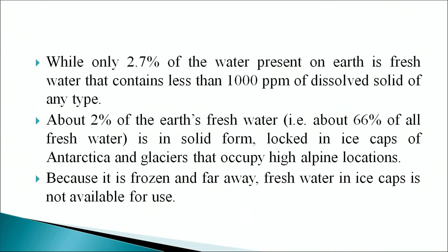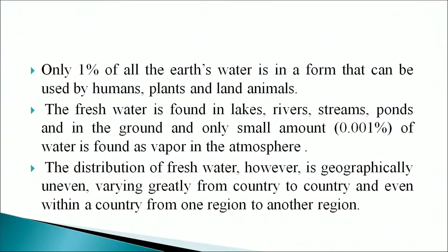Because it is frozen and far away, fresh water in ice caps is not available for use. Only 1 percent of all the earth's water is in a form that can be used by humans, plants, and animals. Fresh water is found in lakes, rivers, streams, ponds, and in the ground. Only a small amount — about 0.001 percent — of water is found as vapor in the atmosphere. The distribution of fresh water is geographically uneven, varying greatly from country to country and even within a country from one region to another.